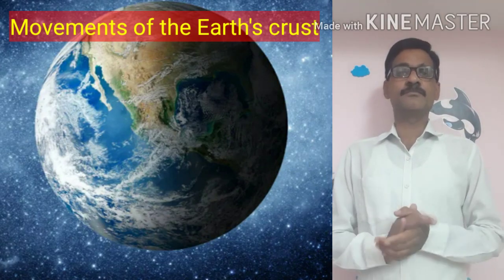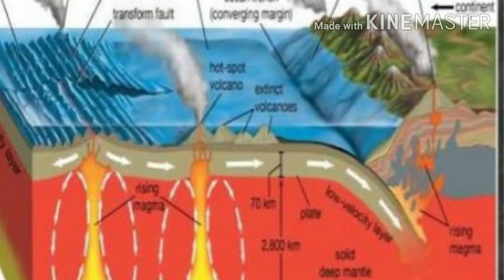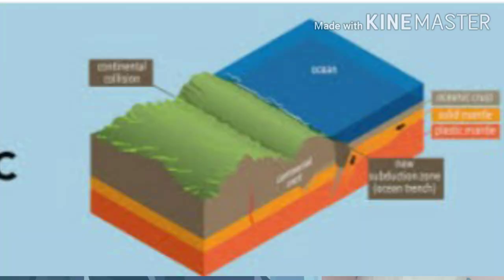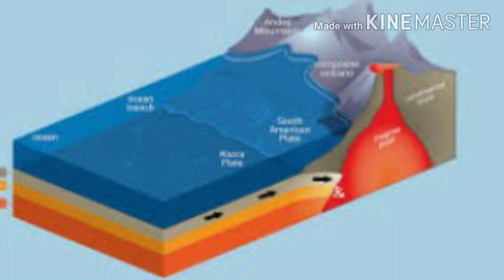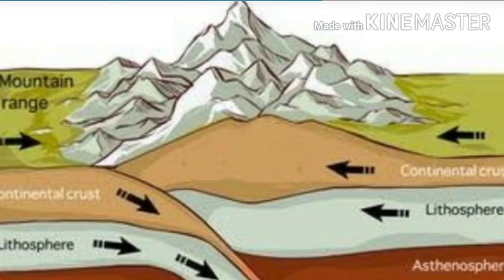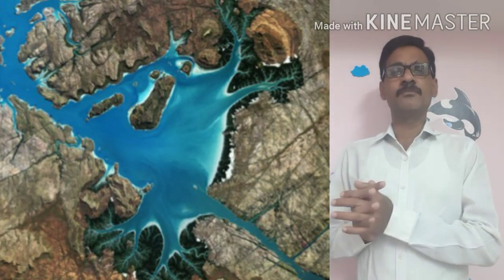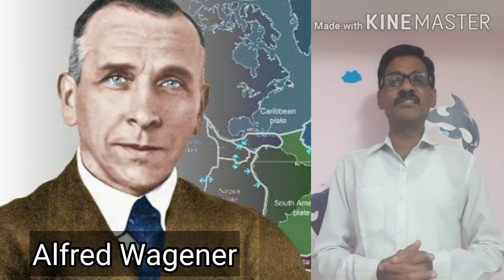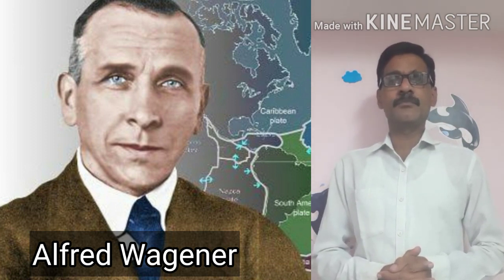Movements of the earth crust: when we see the shape and position of the continents, they seem constant. But earlier they moved, collided, and merged. Sometimes mountains rise and erode to land level; sometimes basins form and dry up. This took place over millions of years. In the early 20th century, the German meteorologist and geophysicist Alfred Wegener made a theory.